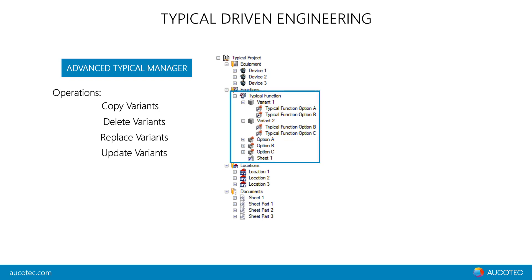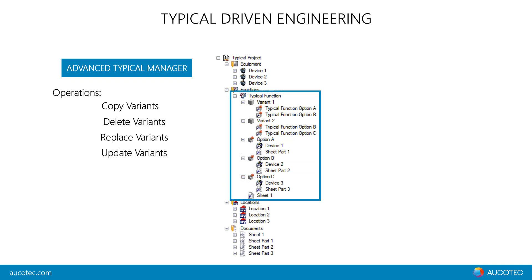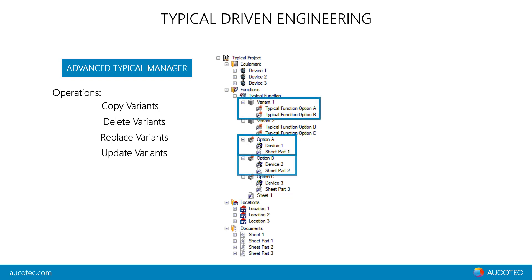Typicals inside of EB are based on functions because they represent an abstract logical layer that can combine nearly every object inside of EB with associations. Here in the middle we can see a typical function. It is divided into two variants and three options. A variant is an object that helps to define a possible or valid combination of options. Variant 1, for example, includes options A and B, and if this typical variant is copied, these two options will be copied as well.